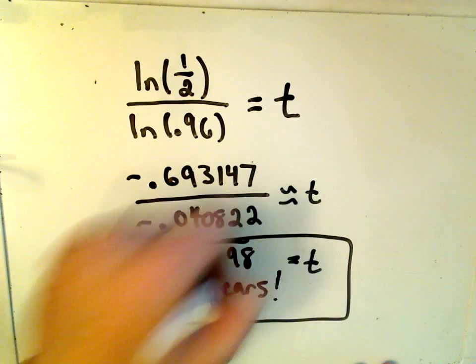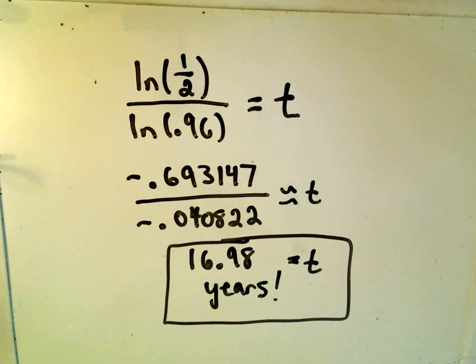So it says if something decreases by 4% annually, it's going to take almost 17 years for that substance to decay down to half of its original size.